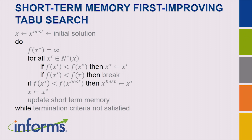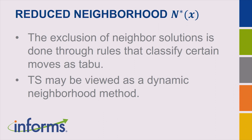The big difference from a plain heuristic is that in tabu search, the move is always made — whether improving or not — and then the short-term memory is updated to modify the neighborhood for the next iteration. Termination criteria typically involve a number of iterations or time spent running the procedure. The reduced neighborhood operates through rules that classify certain moves as tabu; if a move is tabu, you don't go to that neighbor. This makes tabu search a dynamic neighborhood method — the neighborhood keeps changing as you move along.